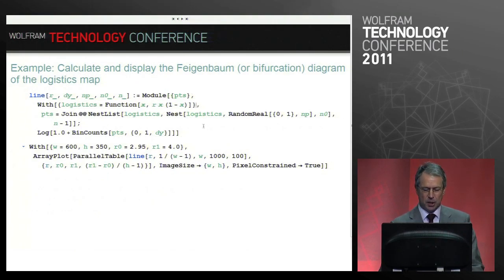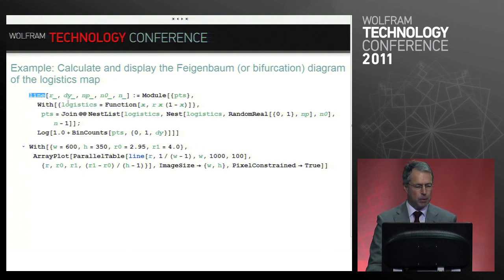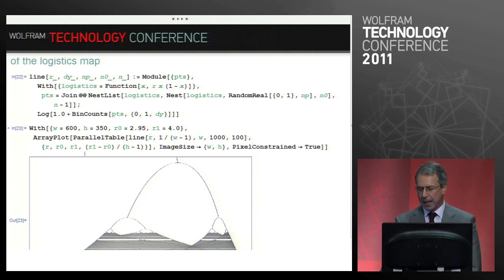Here's an example that is not trivial, which shows you that I don't really have to do anything. This just works with all the defaults. Here is a function that computes one line in the bifurcation diagram of the logistics map. It does a bin count, logarithmic weighting of the number of points there. I just do a parallel table and an array plot of these things and you get that bifurcation diagram without having to worry about anything. Obviously this function is used inside the parallel table, so it needs to be communicated to the remote kernels so that they know about it. But this is all automatic now. That's part of this automatic parallelization.